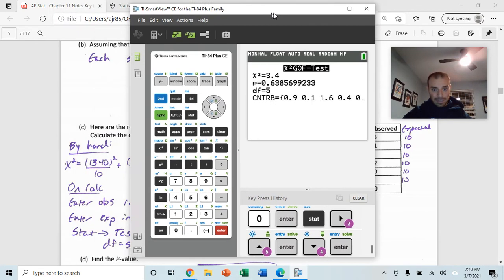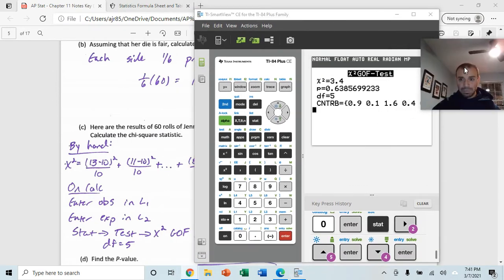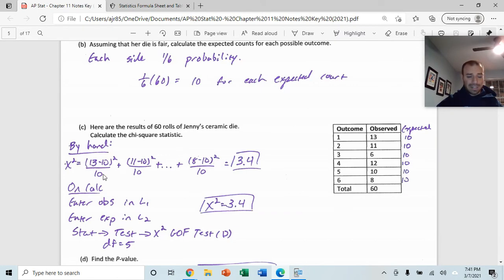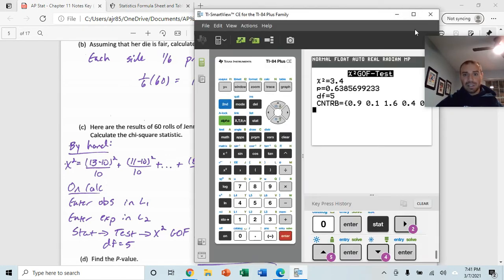This part in here, this 0.9 and 1.1, that is giving me each individual part of the chi-squared test statistic. For example, if I do 3 minus 10 squared, that's 3 squared, which is 9, over 10, which is 0.9. That's that part right there. So, these values in here give you each of these parts of the chi-squared test statistic. We're going to copy down the chi-squared test statistic and the p-value, and then we can go from there.